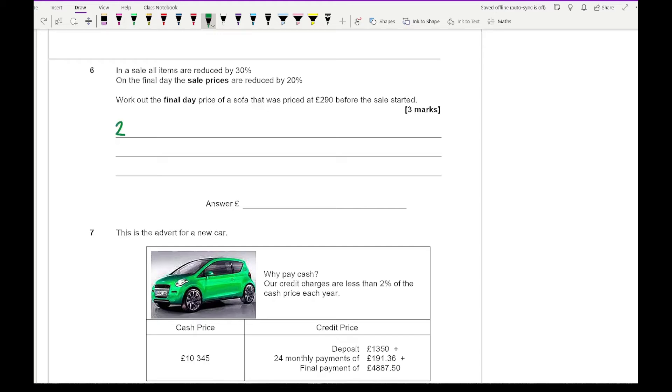In the sale it's 30% off, so 100 take away 30 is 70, so we multiply by 0.7. Then on the final day we take away 20%, so 100 take away 20 is 80, multiply by 0.8. If I type that all into my calculator, £290 times 0.7 times 0.8, I get a final answer that the sofa sale price is going to be £162.40.